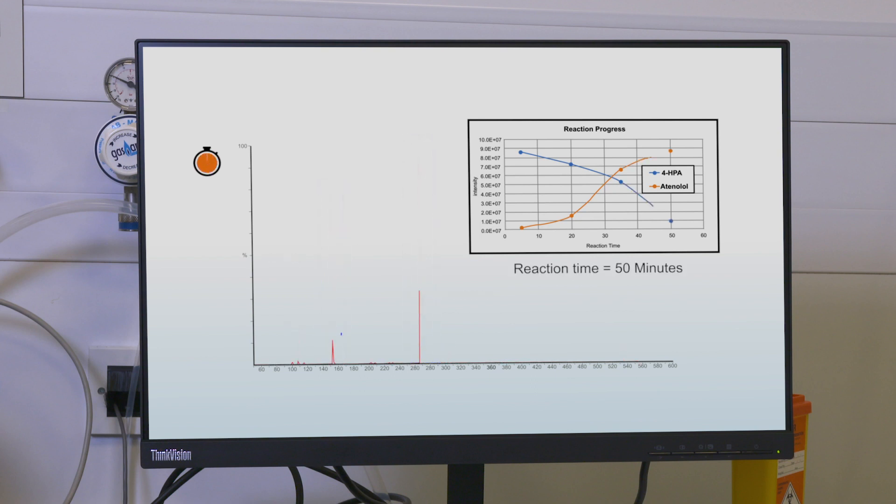By using the radian ASAP, expert and non-expert MS users alike have access to rapid mass spectral data for reaction monitoring.